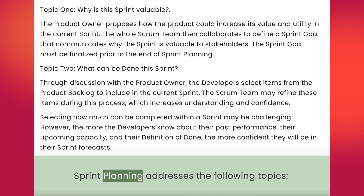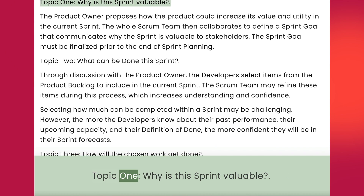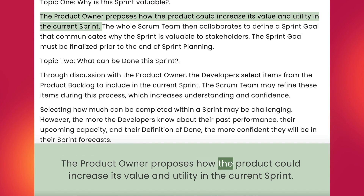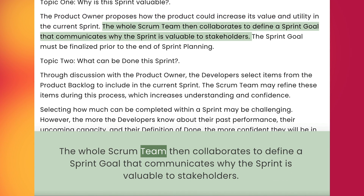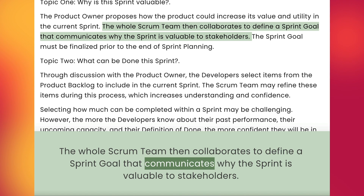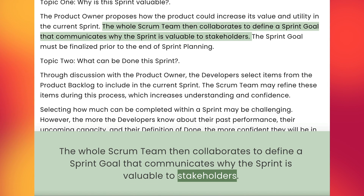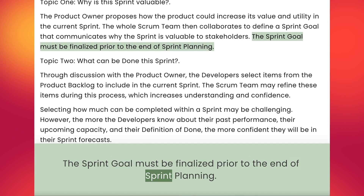Sprint planning addresses the following topics. Topic 1: Why is this sprint valuable? The product owner proposes how the product could increase its value and utility in the current sprint. The whole Scrum team then collaborates to define a sprint goal that communicates why the sprint is valuable to stakeholders. The sprint goal must be finalized prior to the end of sprint planning.